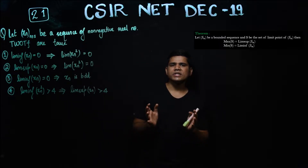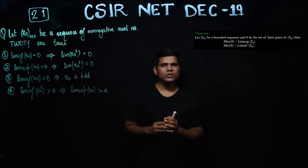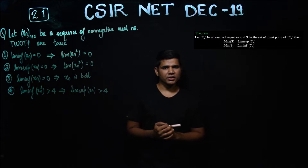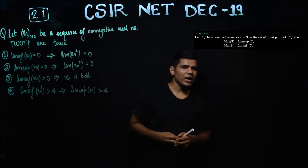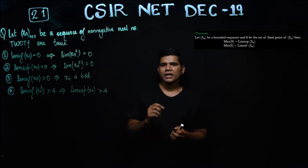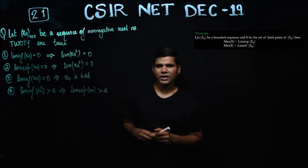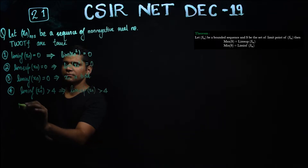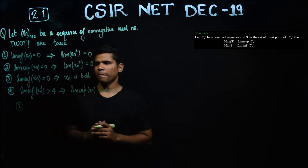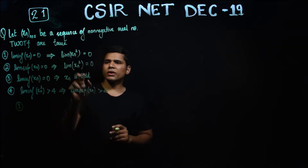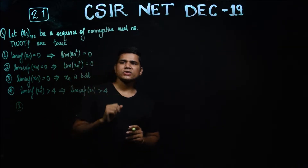So if you have a bounded sequence, you can easily determine what is limit superior and what is limit inferior. Using this theorem, I am going to generate a counter-example. For option one, it says: if limit inferior of Xn is zero, then this will imply that the limit of Xn squared is zero.